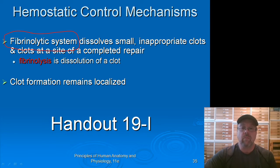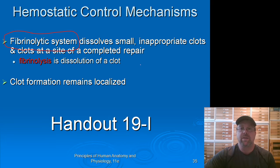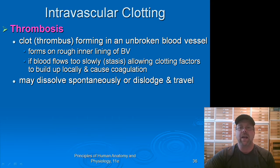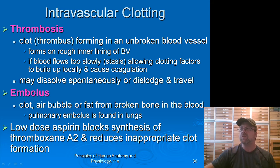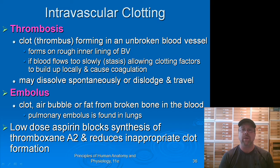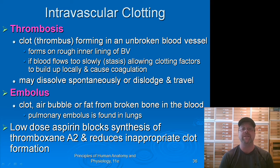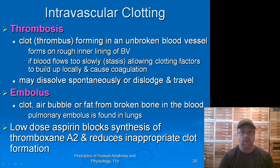We're going to finish out this chapter. As mentioned in the previous video, we have blood clotting that may be inappropriate. If we have a blood clot that's inappropriate, we call it a thrombosis — a clot forming in an unbroken blood vessel where it shouldn't be. Maybe it's a genetic disorder. These may dissolve spontaneously, or they can dislodge and travel and cause major problems like a heart attack or a stroke.